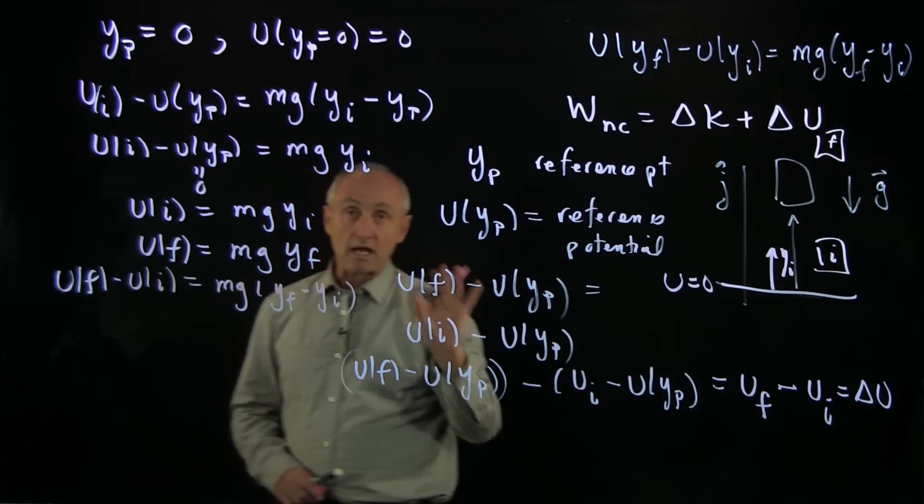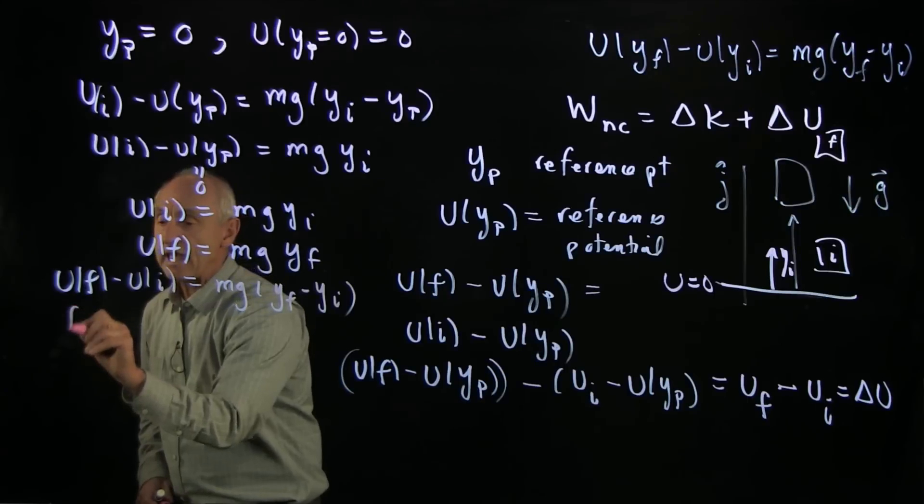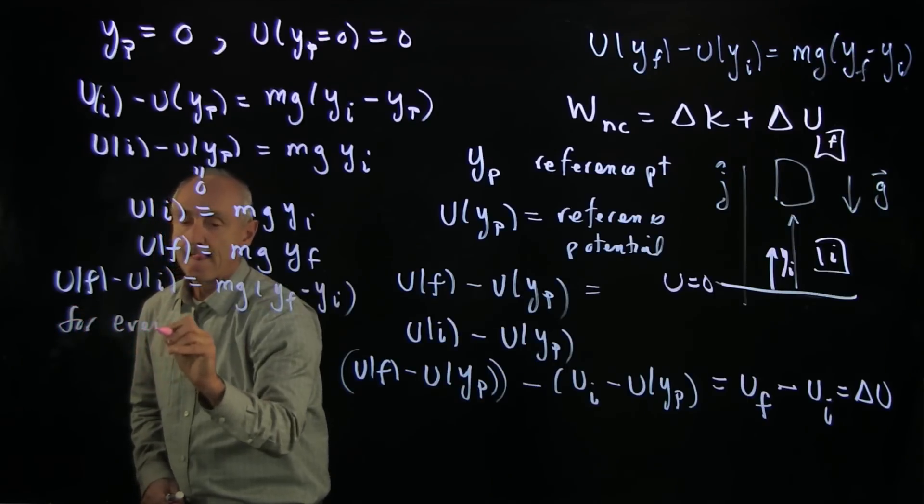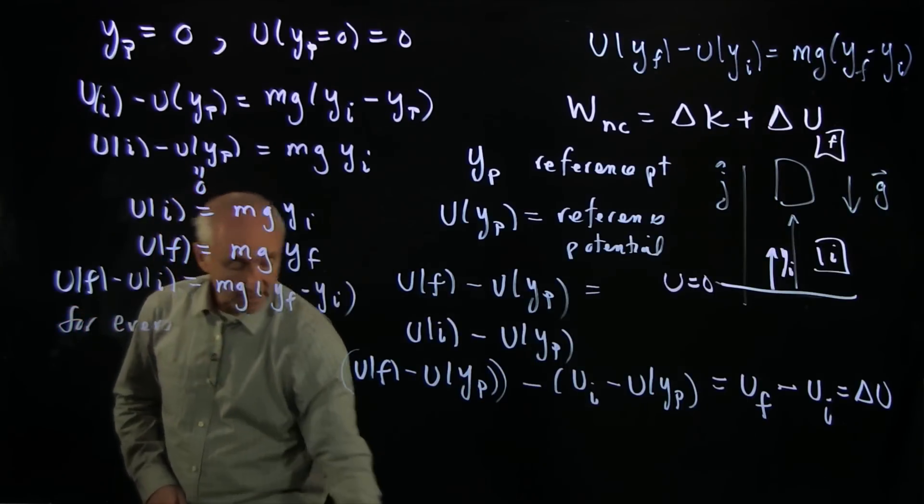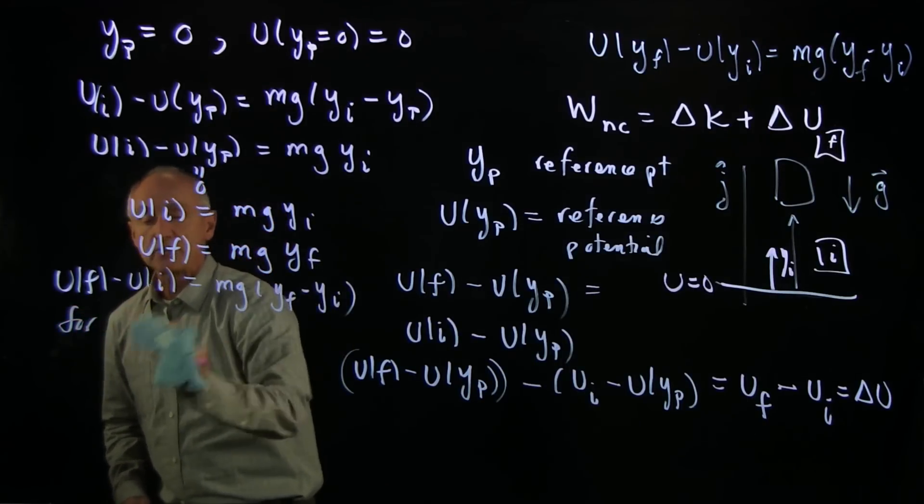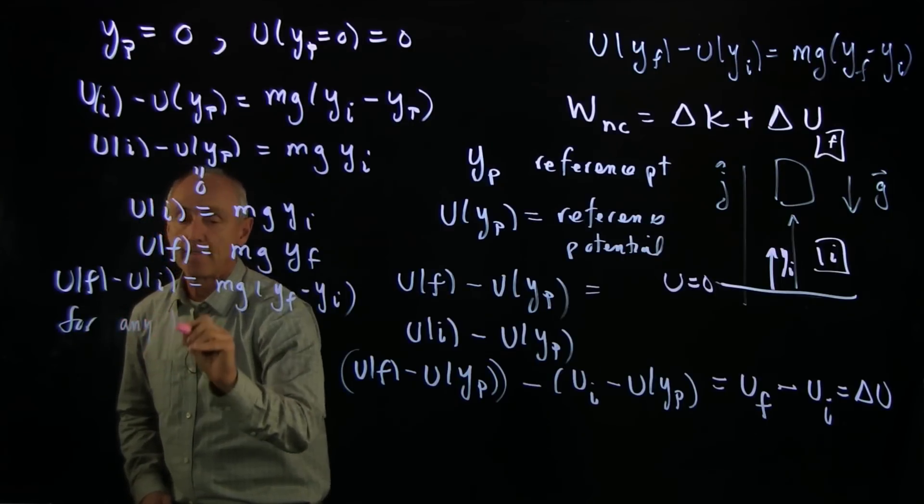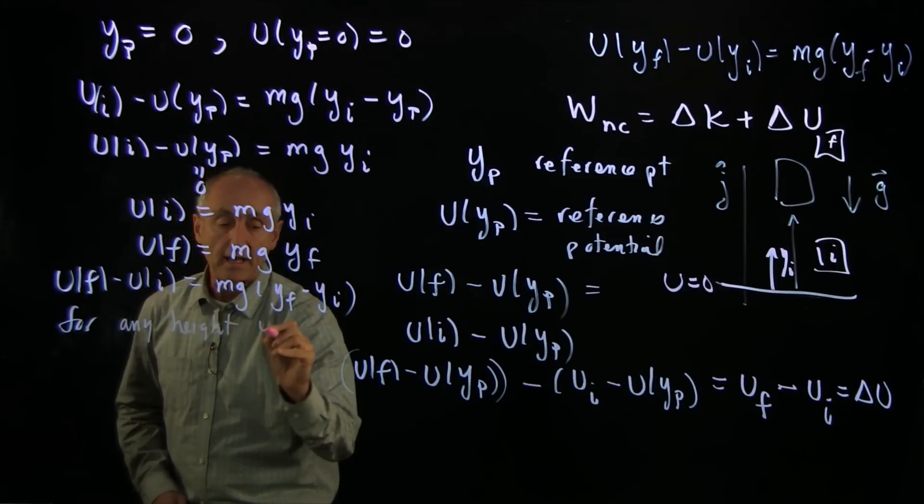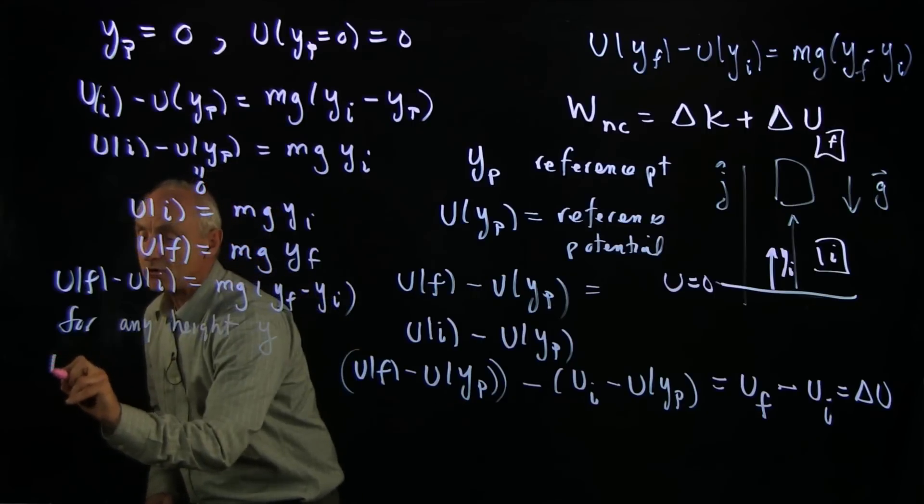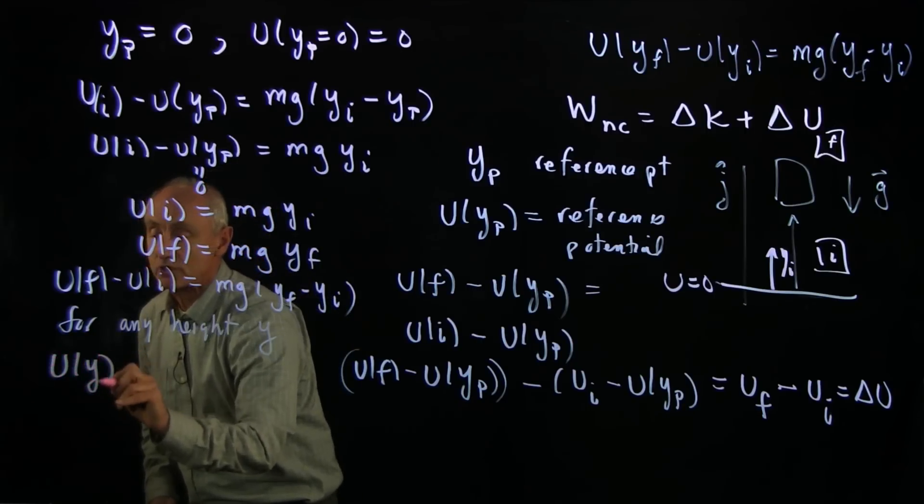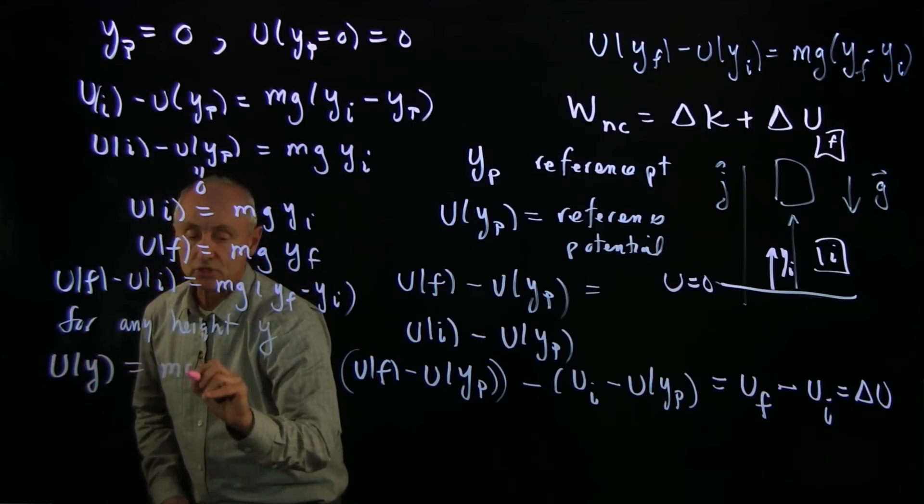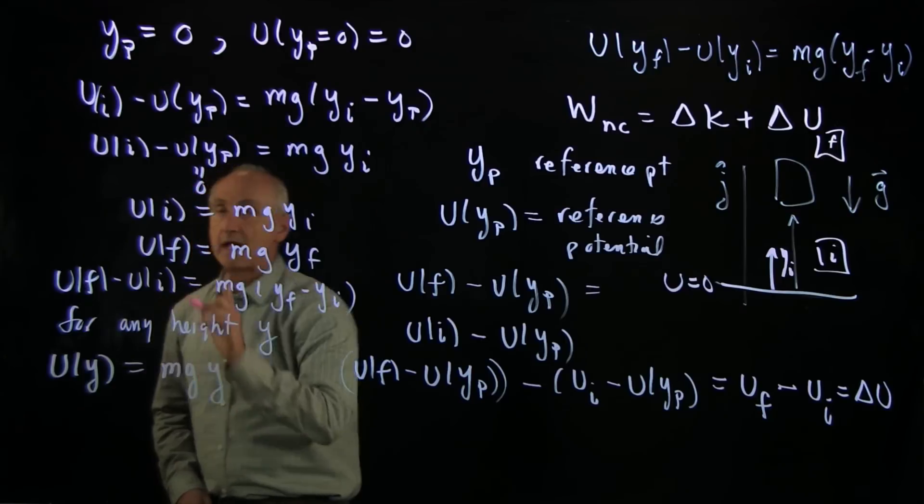This we can generalize by saying that for any height y, our potential energy function for the gravitational force u of y is equal to mg y.